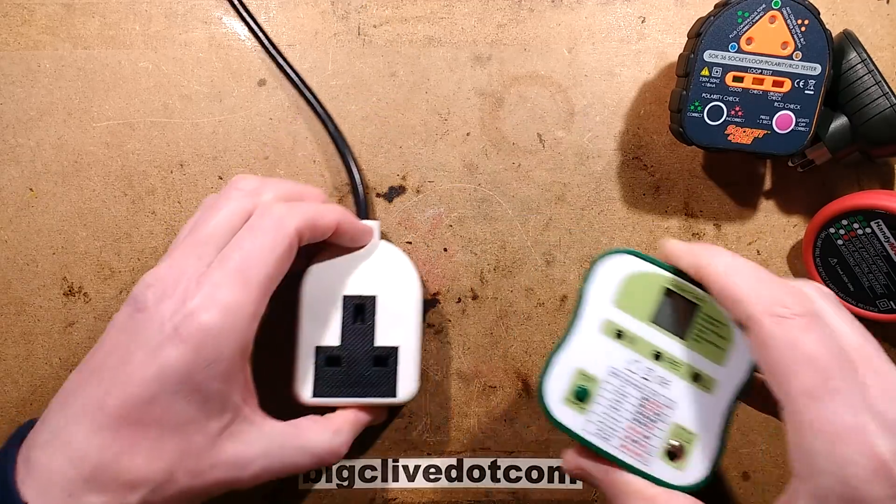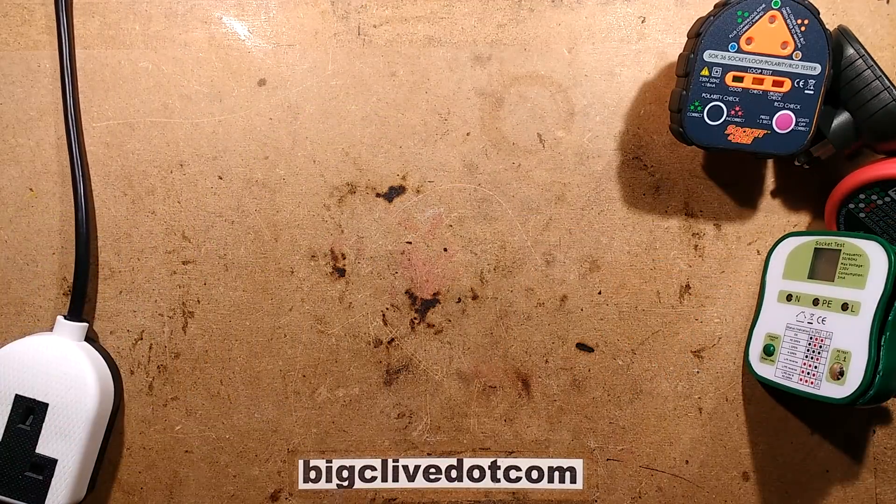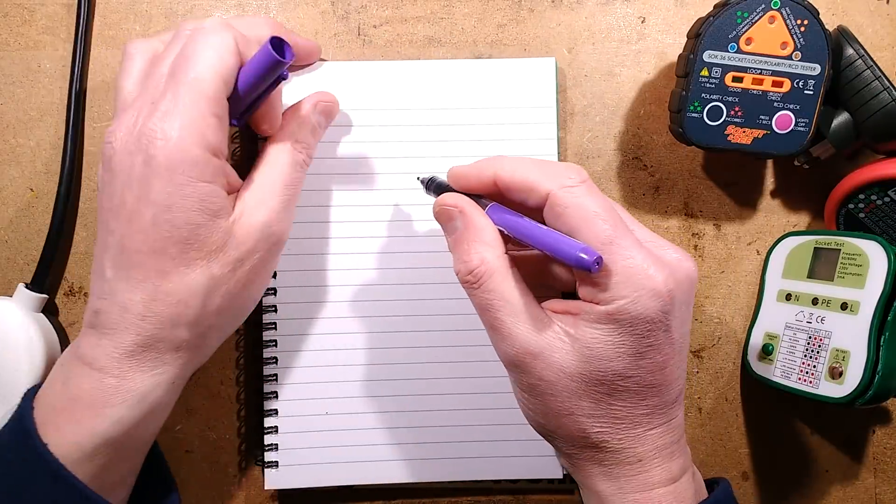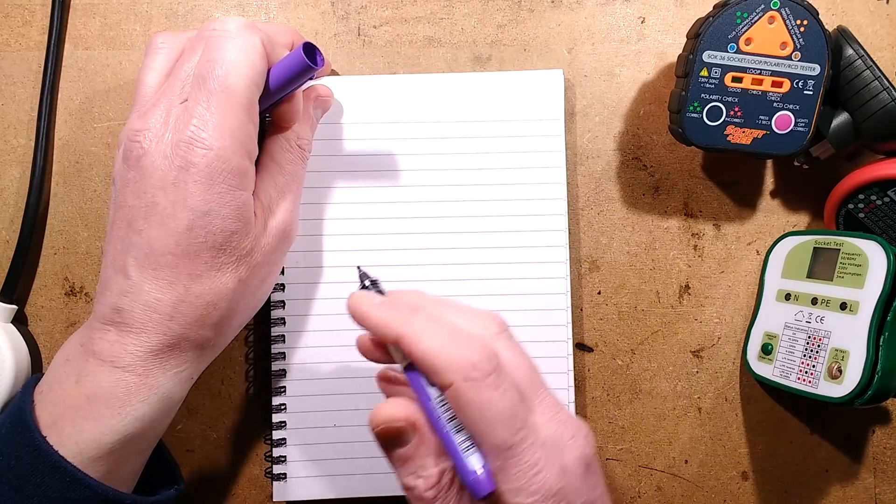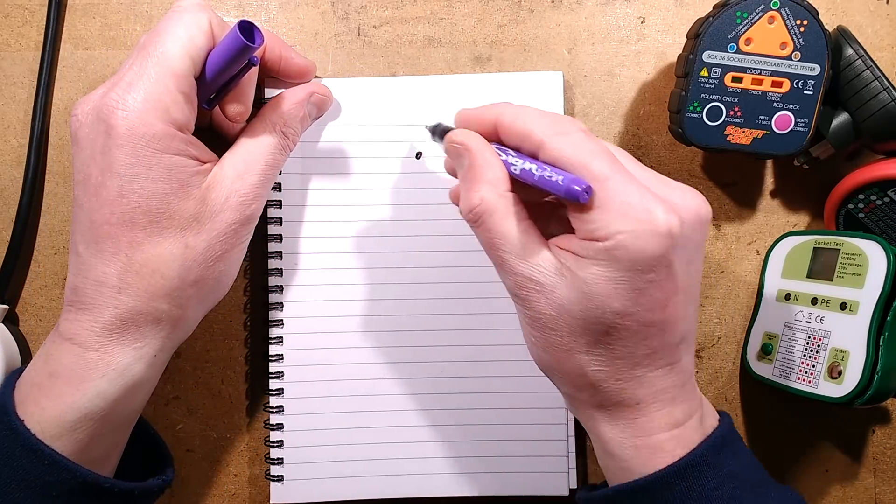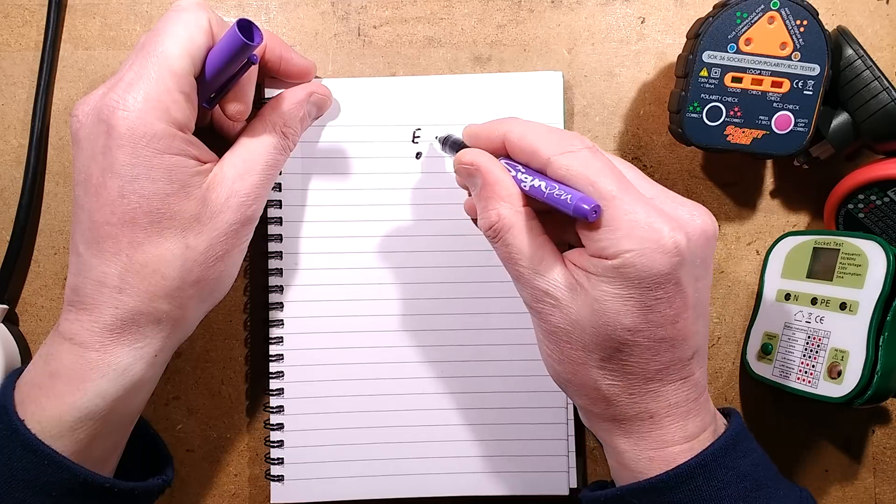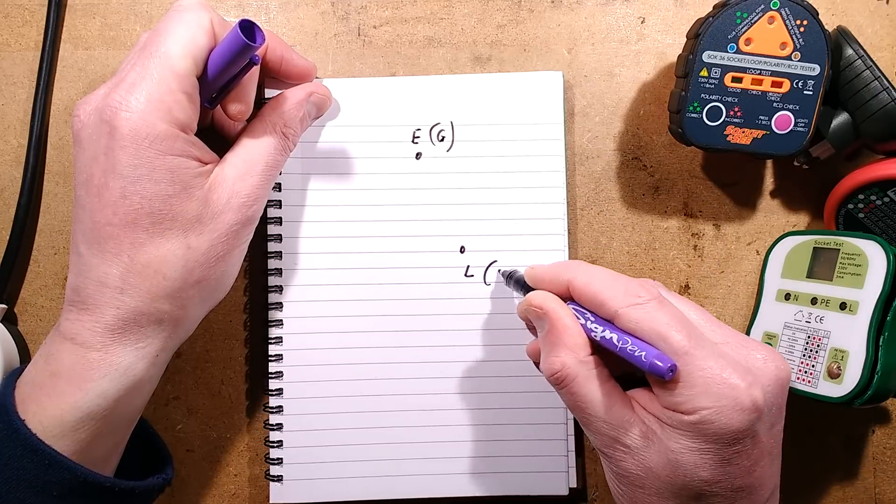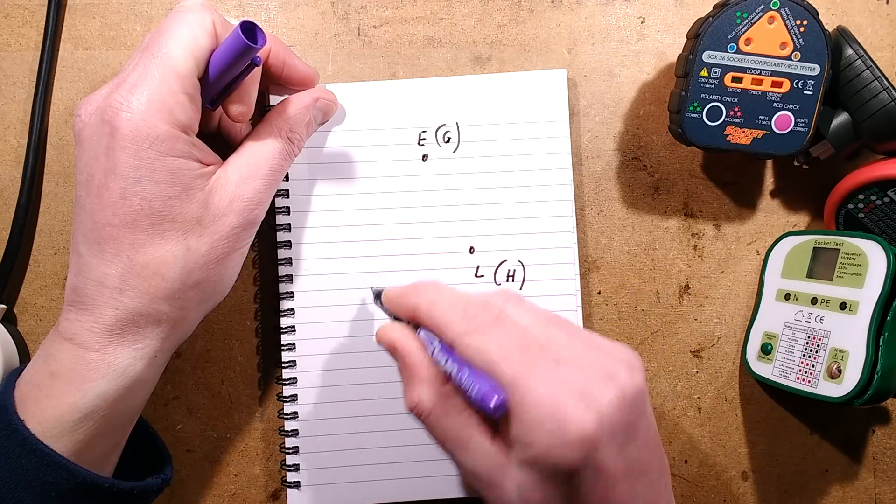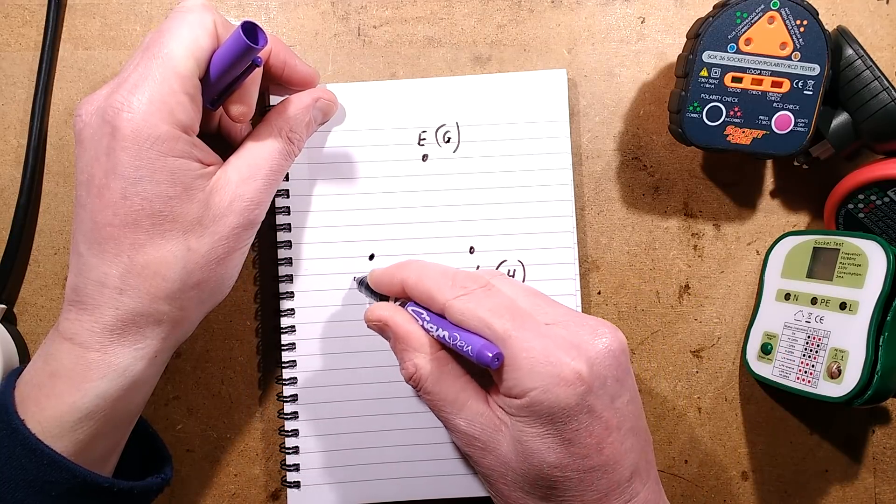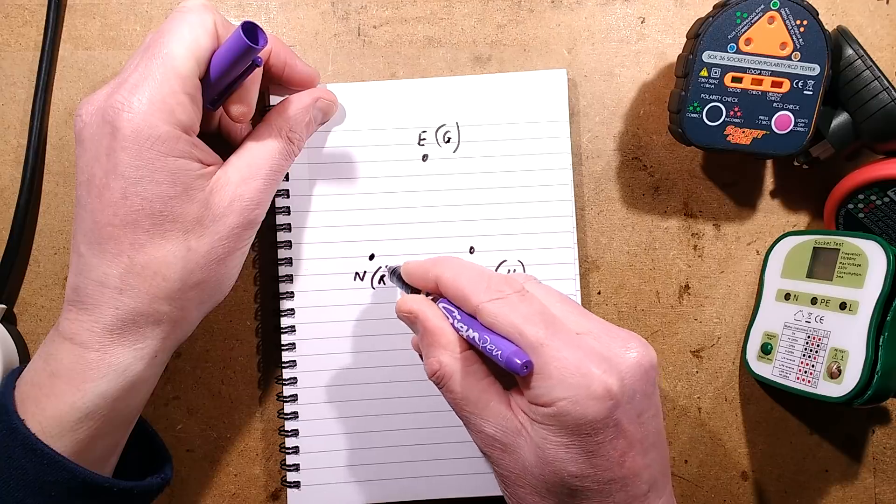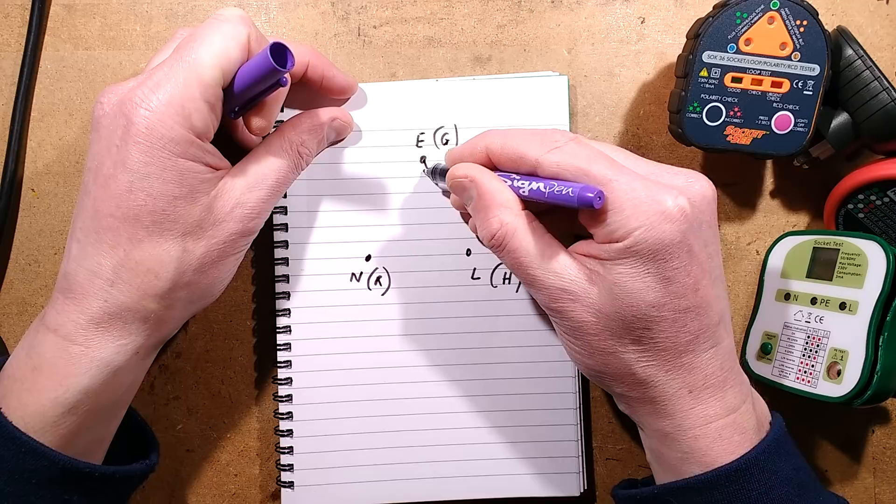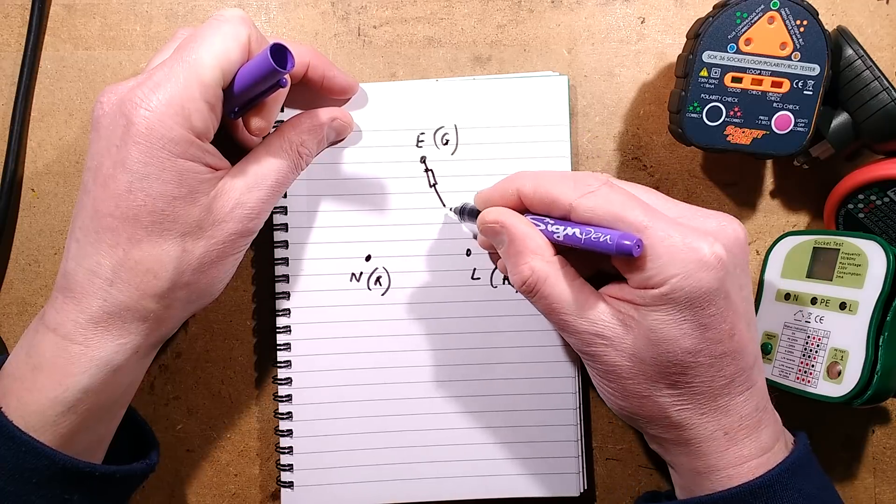The principle of these is very simple. One of the earlier testers used to be a neon plug tester, and it was very simple. You had the earth or ground, you had the live or hot, and you had the neutral or return. The circuitry was so simple - it was basically three neon indicators. You'd have a resistor and you'd have the neon indicator.